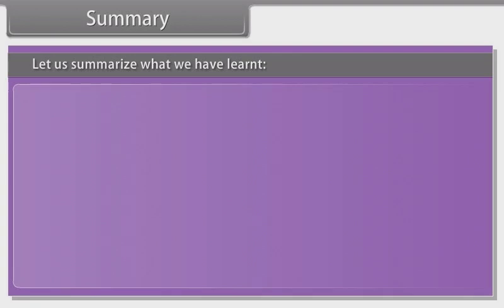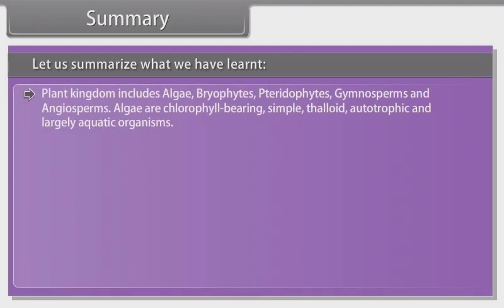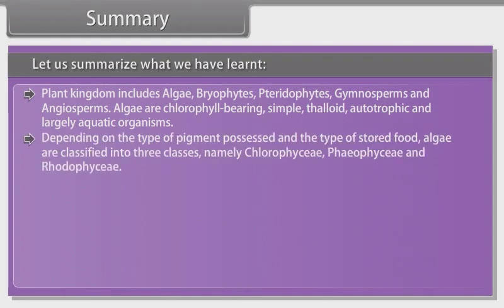Let us summarize what we have learned. Plant kingdom includes algae, bryophytes, pteridophytes, gymnosperms and angiosperms. Algae are chlorophyll bearing, simple, thalloid, autotrophic and largely aquatic organisms. Depending on the type of pigment possessed and the type of stored food, algae are classified into three classes, namely chlorophyceae, phaeophyceae and rhodophyceae.